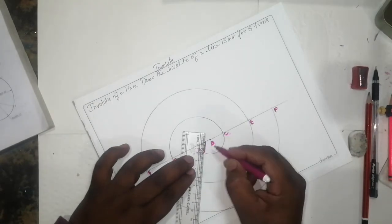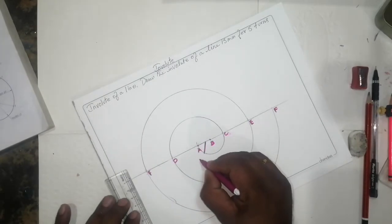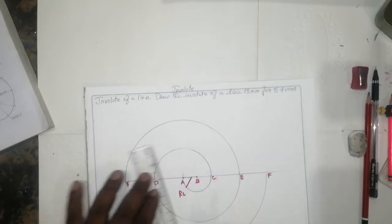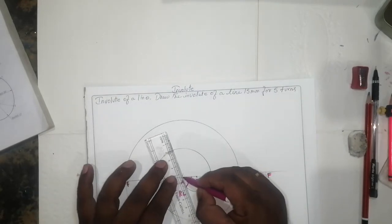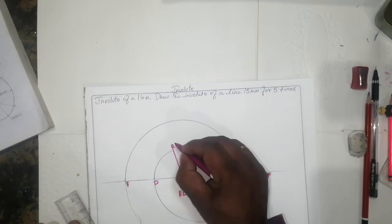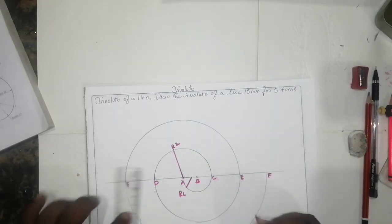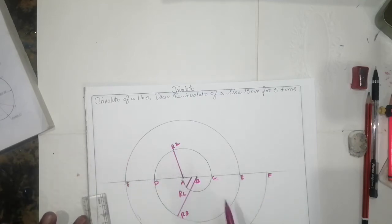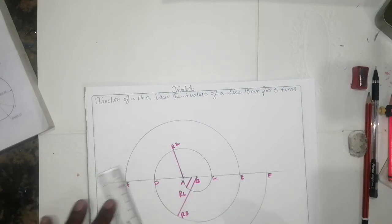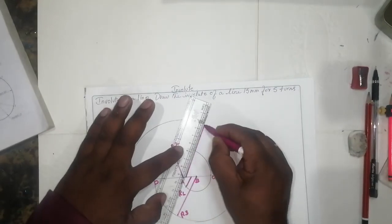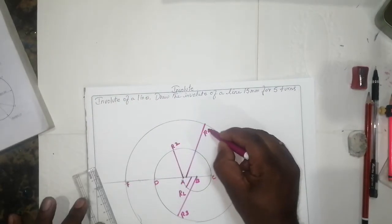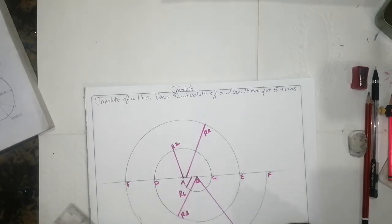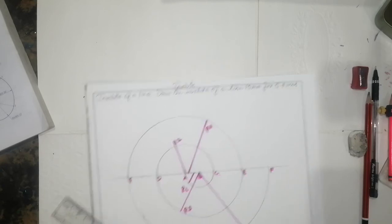So this is the radius one R1, this is the R2, this is the R3, this is the R4, this is the radius 5.